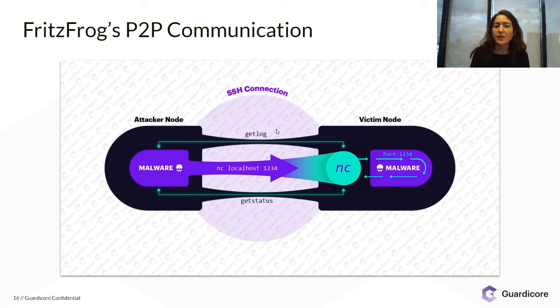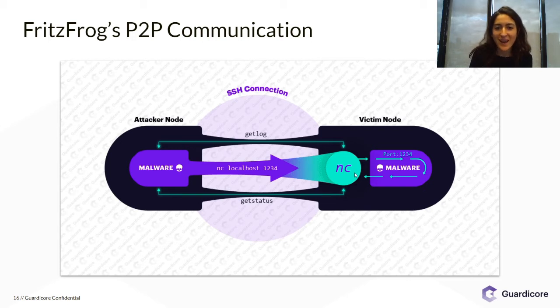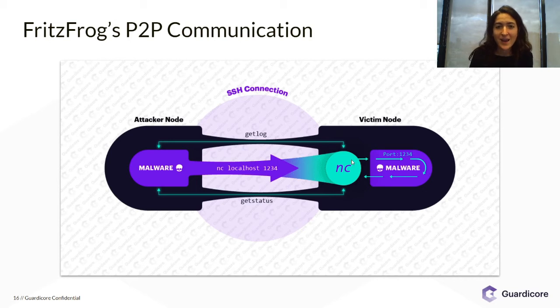It can send get log, get status, get peer stats, get blob stats, and this will reach the netcat client — it will be the input of this netcat client and then directed to the malware over port 1234.